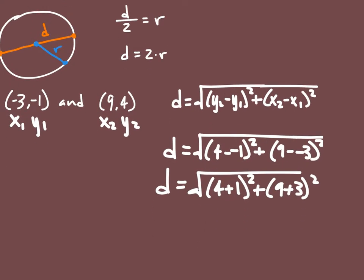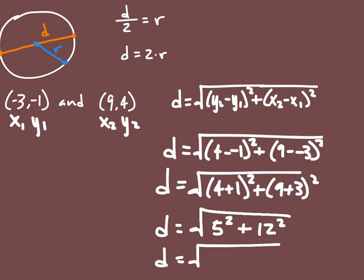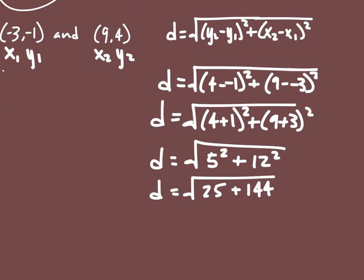From there, we want to evaluate that and do the math. We're going to get 4 minus negative 1 is really 4 plus 1 squared plus 9 plus 3 squared. So the distance is equal to 5 squared plus 12 squared, which gives us 25 plus 144. So the distance is going to be equal to the square root of 169.